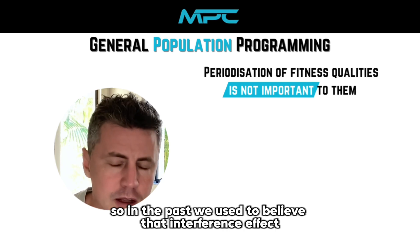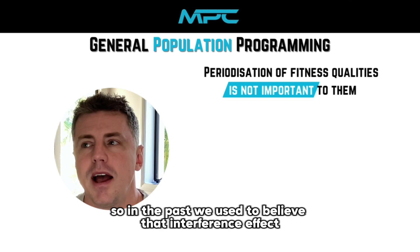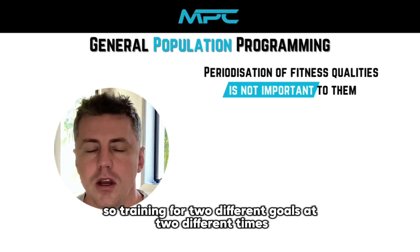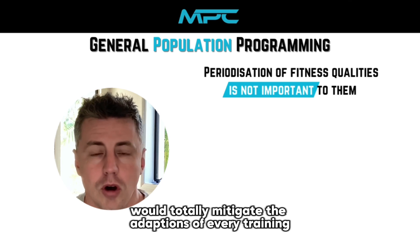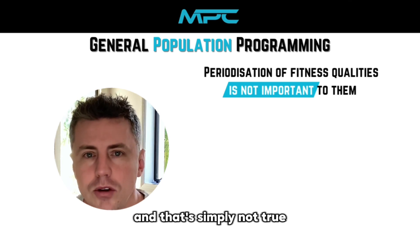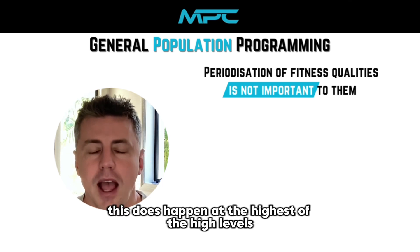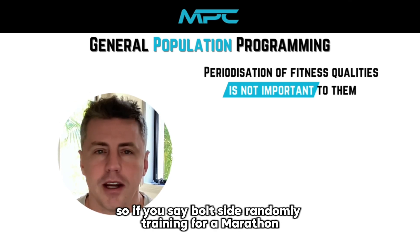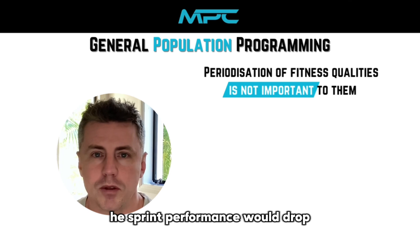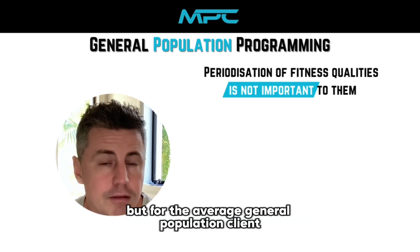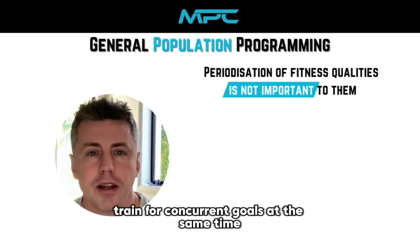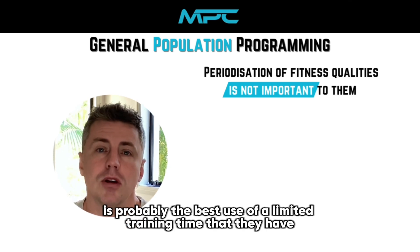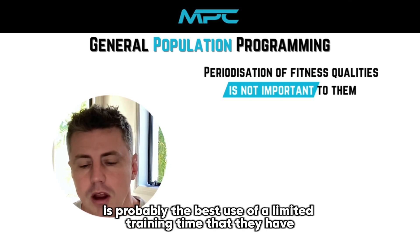In the past, we used to believe that interference effect — training for two different goals at two different times — would totally mitigate the adaptations of each training. And that's simply not true. This does happen at the highest levels, so if Usain Bolt started randomly training for a marathon, his sprint performance would drop. But for the average general population client, training for concurrent goals at the same time is probably the best use of the limited training time that they have.